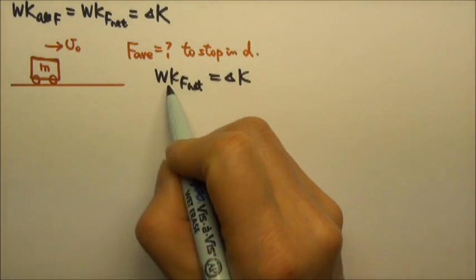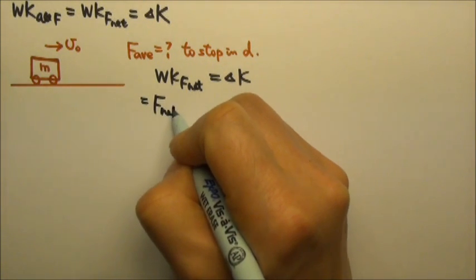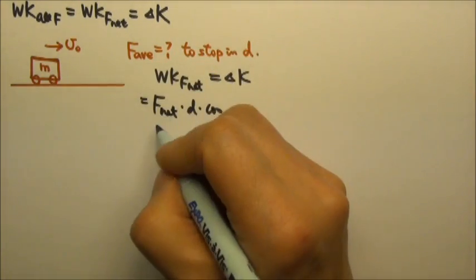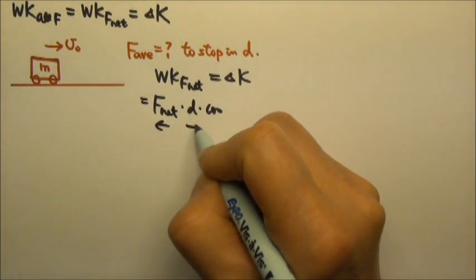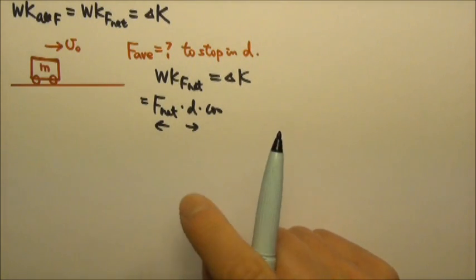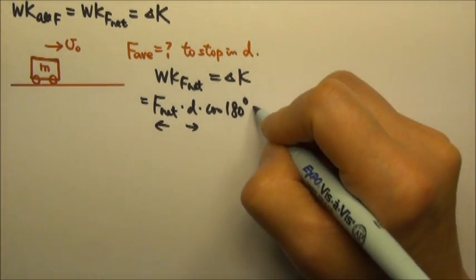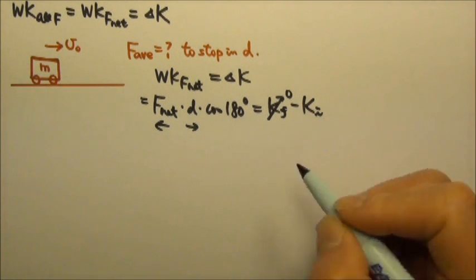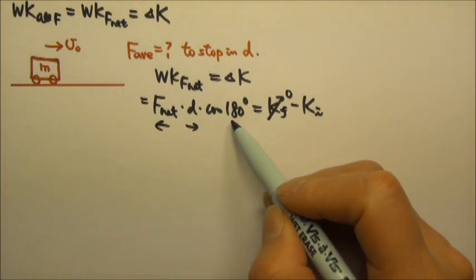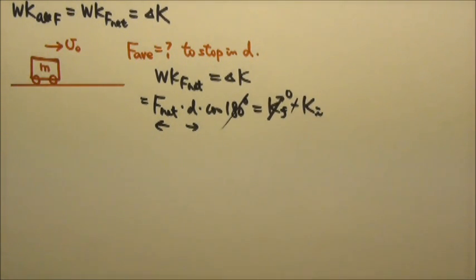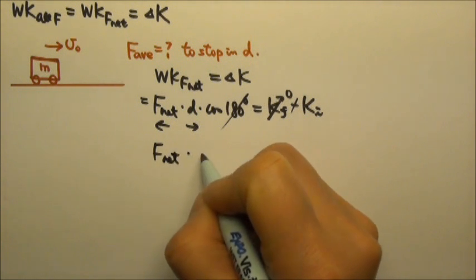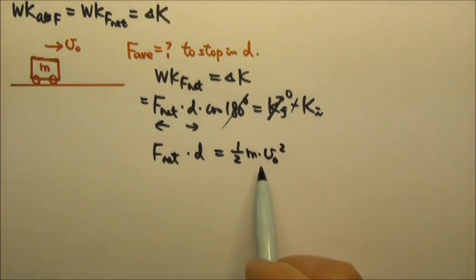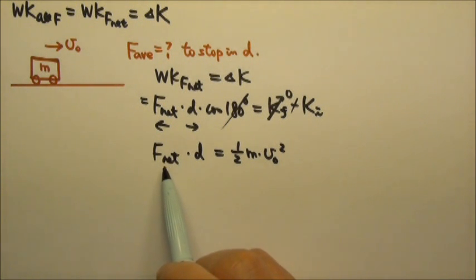Using the work-energy theorem: the work done by the net force is the force times the displacement times cosine of the angle between them. To stop the cart, we push to the left while displacement goes to the right, so the angle is 180 degrees. ΔKE is the final KE minus initial KE; since the cart stops, final KE is zero. Cosine 180 is negative one, so the two negatives cancel, giving net force times d equals ½mv₀². Dividing both sides by d gives the required average net force.